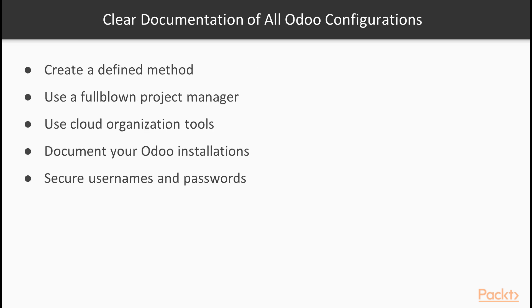Once you have decided what Odoo servers you require and how those installations should be configured, it is important that you create a clearly defined method for documenting all the details that go along with the setup. This can be as simple as a text or Microsoft Word document kept in a known place and up to date, or as complex as using a full-blown project manager. Cloud organisation tools such as Dropbox, Evernote and Google Documents provide many options for documenting your Odoo installations. You also need to be aware of how you secure usernames and passwords and have a clear policy on how that information is securely stored.